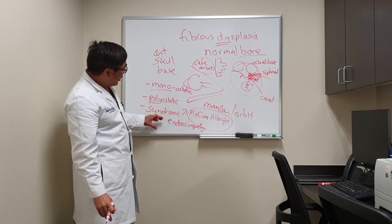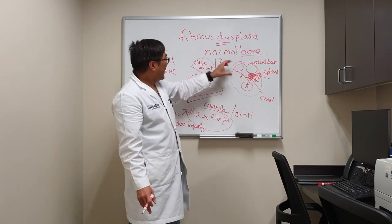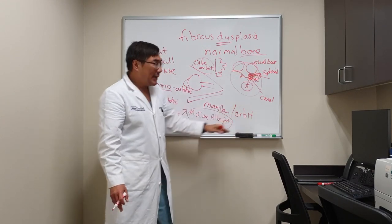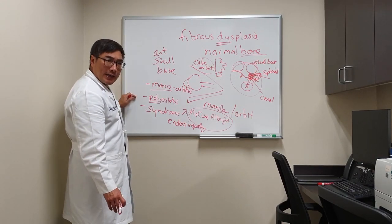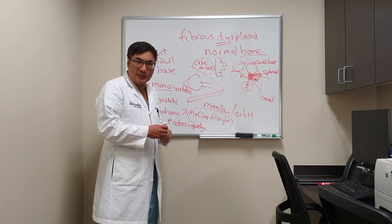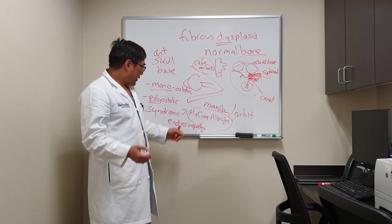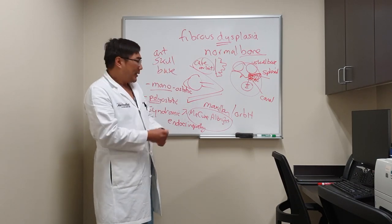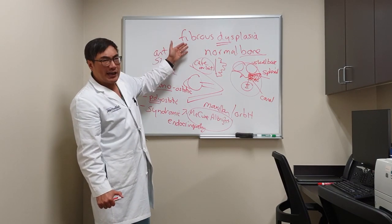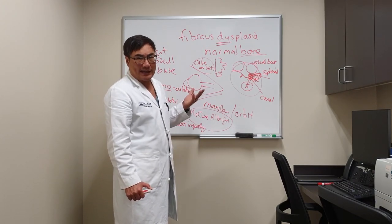To summarize, fibrous dysplasia is dysplastic, not neoplastic. It can affect the anterior skull base, producing orbital signs or optic neuropathy. It can be monostotic, polyostotic, or syndromic. If syndromic, the syndrome is McCune-Albright, associated with coast-of-Maine café au lait spots and endocrine excess. This is typically a condition of young people — average age is 10 to 20 — so it's rare to see it in older patients without a prior CT scan.